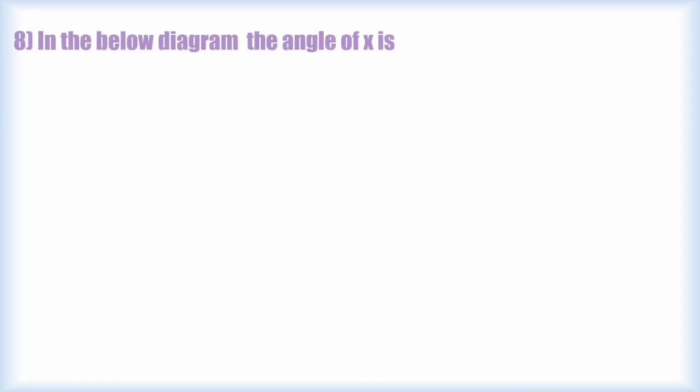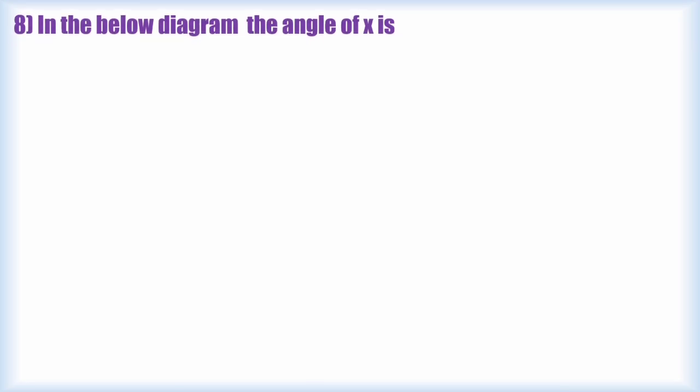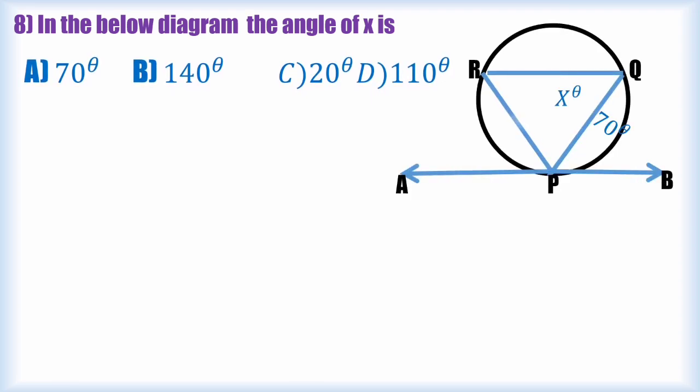Eighth question is also a very easy question as we are doing practical geometry. Then it will be very easy. By using the alternate segment theorem it is working. In the blue diagram the angle of X is we have to find out. In the PQR is the chord of the circle.